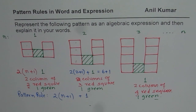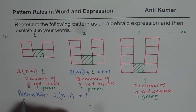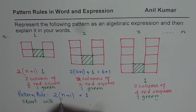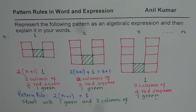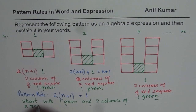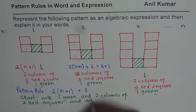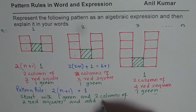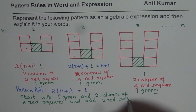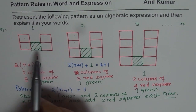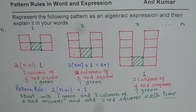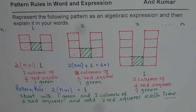The second part of the question is: how do we explain the situation in words? What we can write is: start with one green and two columns of two red squares. And add two red squares each time. So that is how you can describe it — we start with one green and two columns of two red squares, then we add two, and then again we add two more.